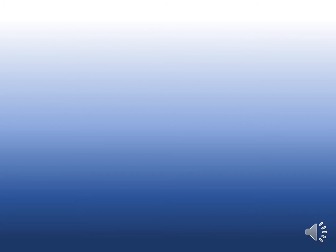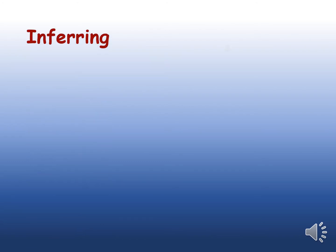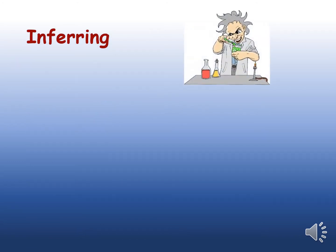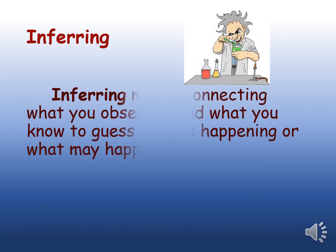The next process skill that we're going to discuss is inferring. Inferring means connecting what you've observed and what you know to guess what is happening or what may happen.